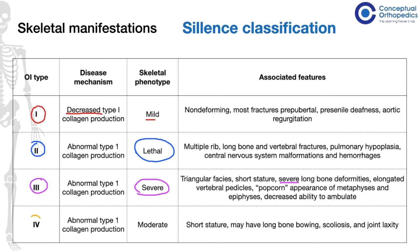In type 4, which is a moderate variety of osteogenesis imperfecta, there is short stature. These children may have long bone bowings, scoliosis, and joint laxity.